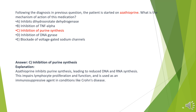The answer is C. Inhibition of purine synthesis. Azathioprine inhibits purine synthesis, leading to reduced DNA and RNA synthesis. This impairs lymphocyte proliferation and function and is used as an immunosuppressive agent in conditions like Crohn's disease.